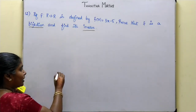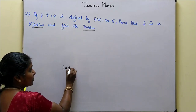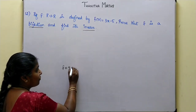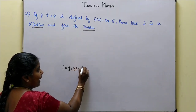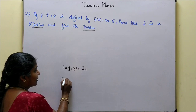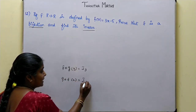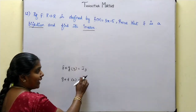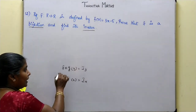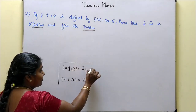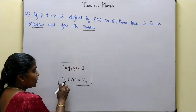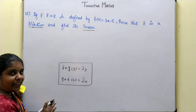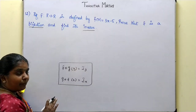We have to find this method using the composite function. f circle g of y equals Iy and g circle f of x equals Ix, where Iy and Ix are the identity functions on Y and X respectively. Now we have to prove that f∘g is the identity function on Y and g∘f is the identity function on X. Then we can say the given function is a bijection function.